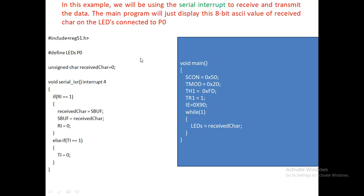So there are two ways the interrupt is generated for serial communication. One: if you are transmitting data from the microcontroller to a GSM module or PC and it completes successfully, the transmit interrupt flag TI is set and the interrupt is generated. The other is the receive interrupt — RI bit. If the microcontroller successfully received all the bits from external communication devices like a GSM module or PC, this receive interrupt bit goes to 1 and the interrupt is generated.